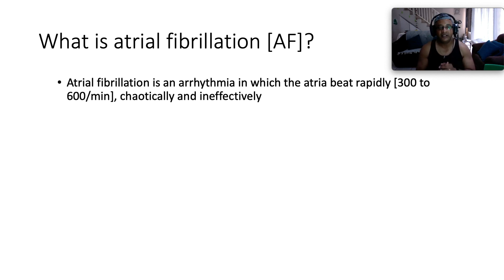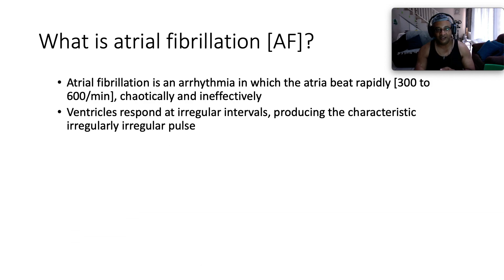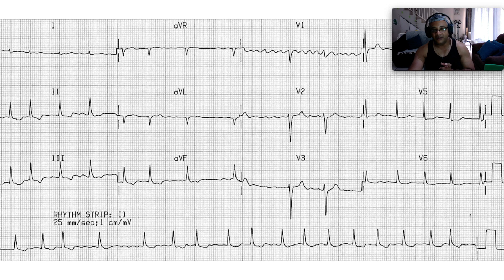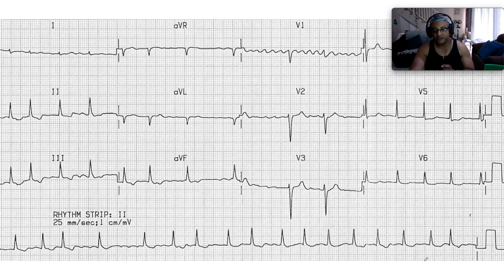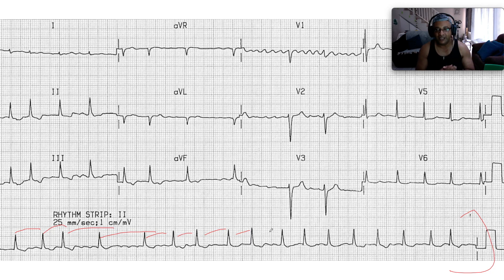What is atrial fibrillation? Atrial fibrillation is a cardiac arrhythmia in which the atria beat rapidly at a whopping 300 to 600 beats per minute. But this contraction of the atria is chaotic and ineffective. As a result, the ventricles respond at irregular intervals, producing the characteristic irregularly irregular pulse. This is a beautiful ECG demonstrating there are no P waves. Looking at the rhythm strip of lead 2, there are no P waves discernible, and if you look at the pattern of the QRS complexes, they are what we term irregularly irregular. Clinically, the irregularly irregular pulse is irregular in terms of rhythm as well as irregular in terms of the actual volume, because the atria are fibrillating.